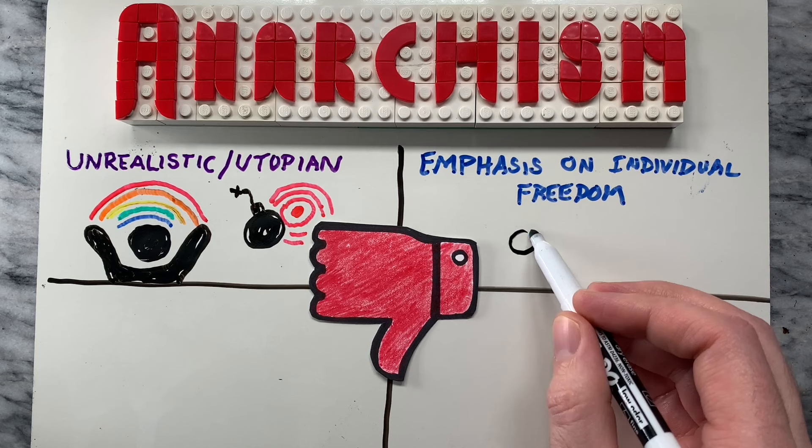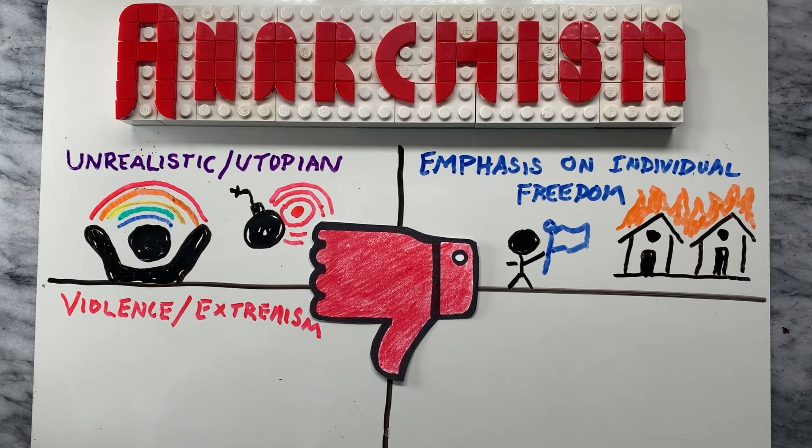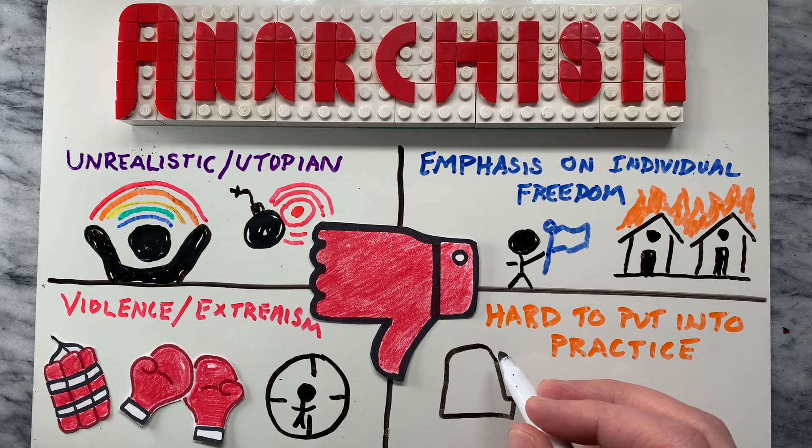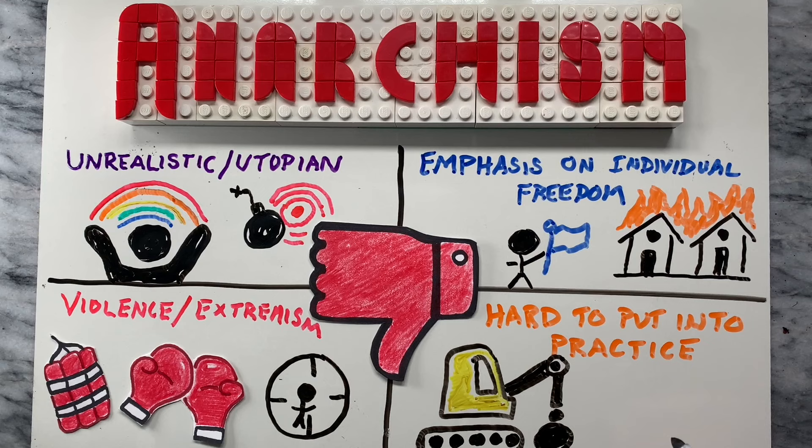Those against anarchism also point out that it has often been associated with violence and extremism, particularly in the forms of bombings and assassinations carried out by anarchist individuals or small groups. Lastly, they say that anarchism can be hard to put into practice, as it often calls for the complete overhaul of existing political and economic systems, which can be difficult to achieve in the real world.